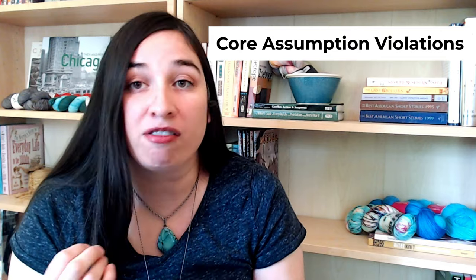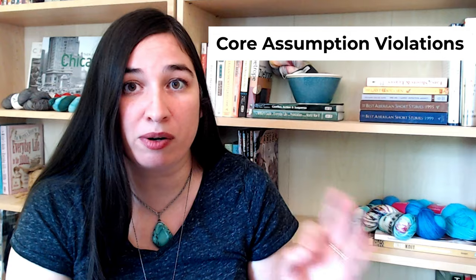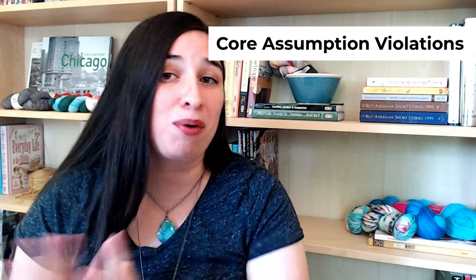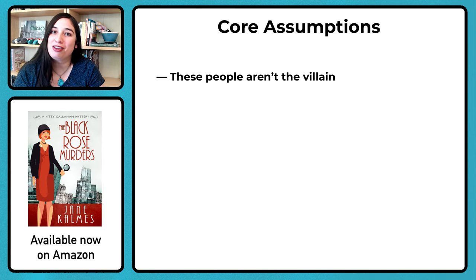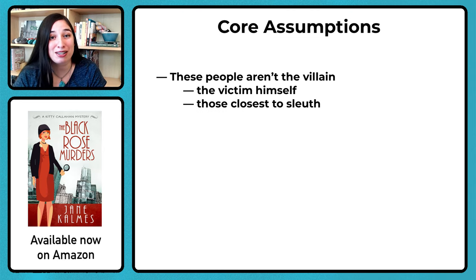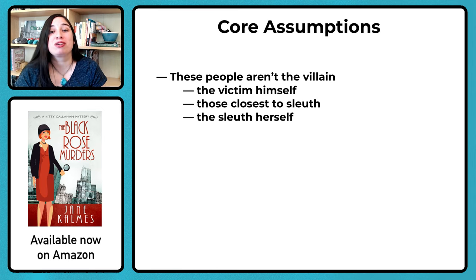Now let's take a moment to talk about core assumption violations. Sometimes the assumption that you are violating isn't one that you've encouraged the reader to make — it's one that the readers brought with them into the story in the beginning. So for example, in a mystery, we generally assume that these people are not the villain: the victim himself, the people closest to the sleuth either professionally or emotionally, and the sleuth herself. However, I have read mysteries that violate each of these assumptions, and it always comes as a huge, delightful surprise.